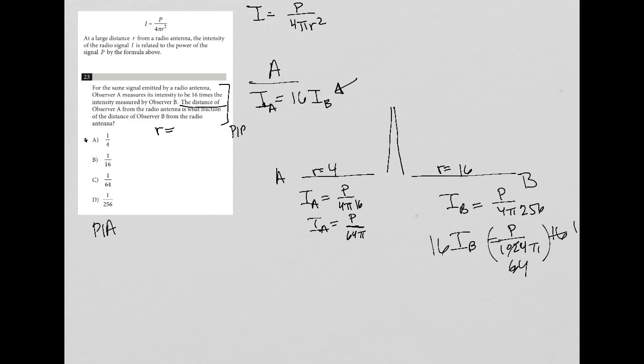So this tells me that multiplying, let me just back up. When the distance from observer A to the antenna is one-fourth the distance from observer B to the antenna, then the intensity measured for observer A is actually equal to 16 times the intensity measured for observer B, which is exactly what the question told us should happen. And therefore choice A is the correct answer.